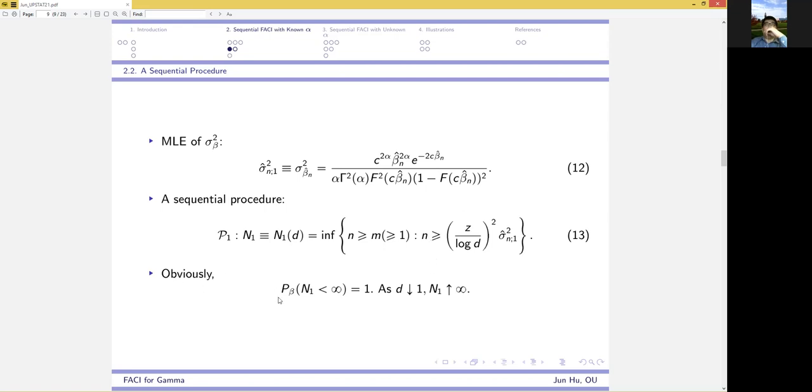Obviously, the probability that n1 is smaller than infinity equals 1, indicating that our procedure P1 terminates with probability 1. And it's also clear that as d goes to 1, n1 goes to infinity.